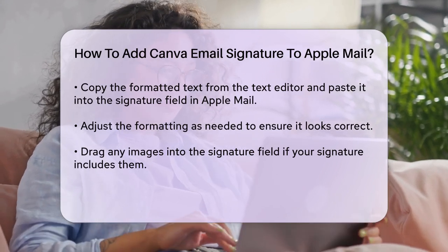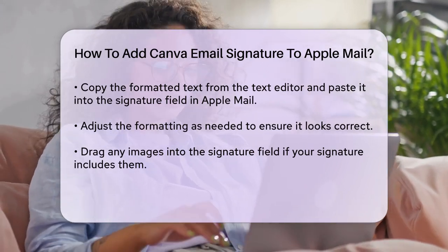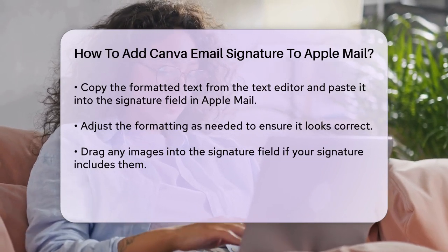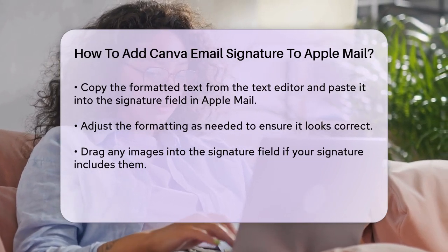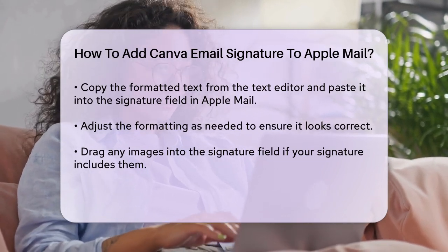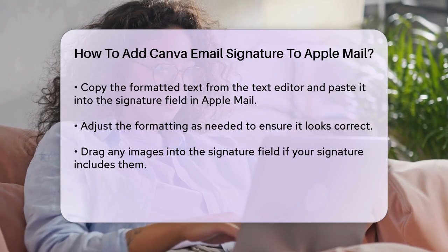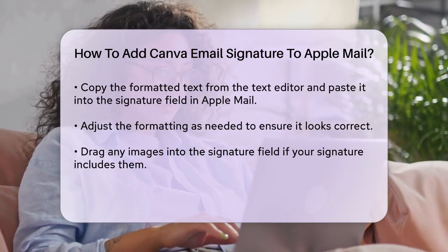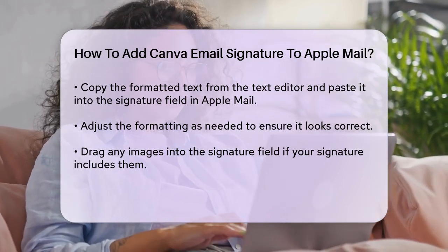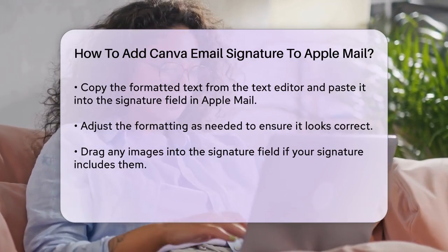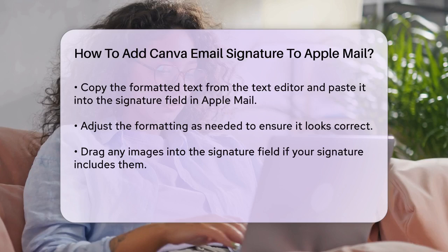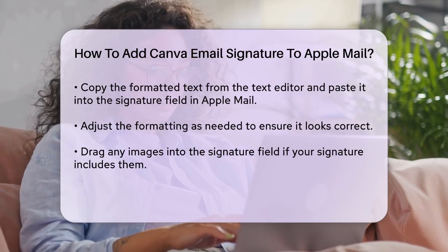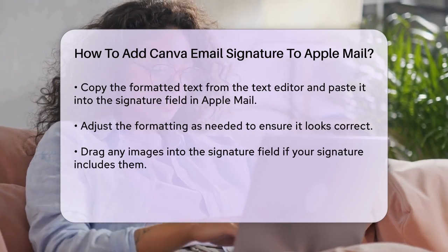If your signature includes images, you can add them directly to the Signature field in Apple Mail. Simply drag the image into the preview area of the signature. To ensure your signature looks right, uncheck the box that says Always match my default message font if you want to keep your custom formatting.